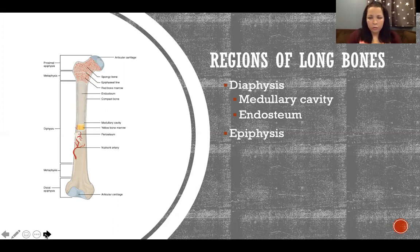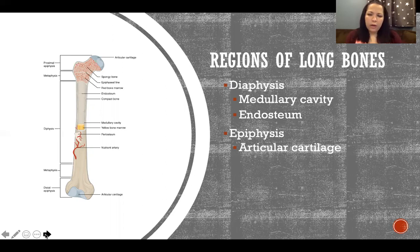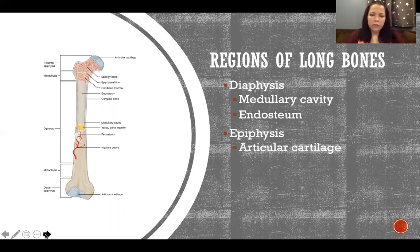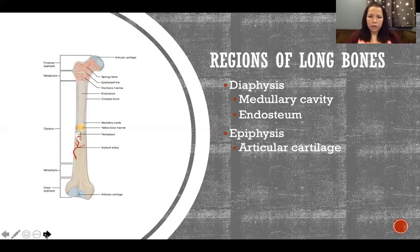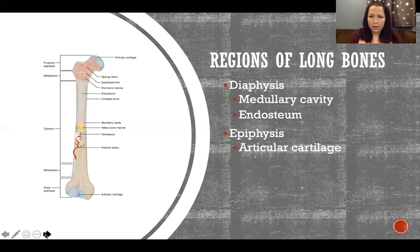For the limbs, there's a proximal epiphysis toward the trunk and a distal epiphysis away from the trunk. The epiphyses also have articular cartilage covering their ends — specifically hyaline cartilage, which is the bluish, very slippery type. When hyaline cartilage is in this location it's called articular cartilage, because that's where two bones form an articulation. It's smooth and slippery to reduce friction in a joint. Hyaline cartilage also exists many other places in the body, but it's only called articular cartilage when it's located at an articulation.